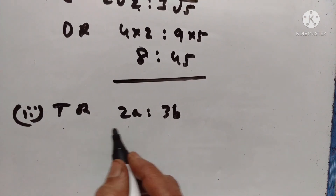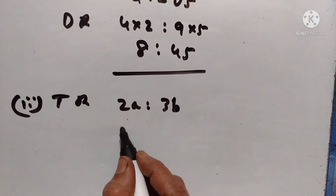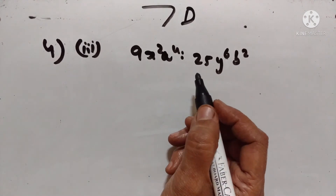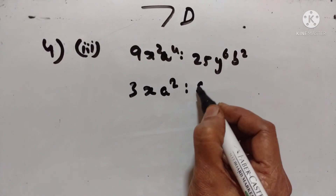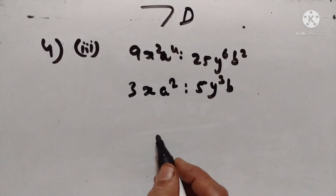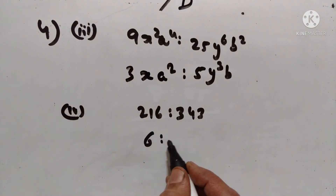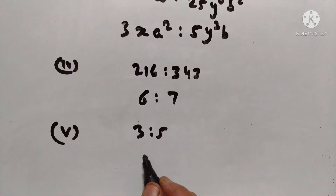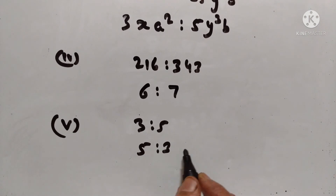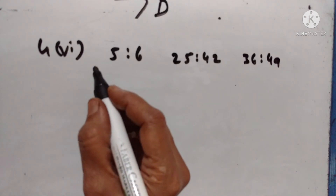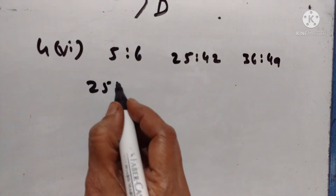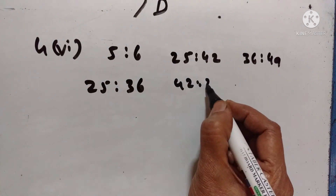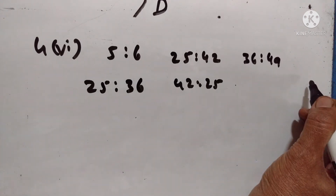Next: triplicate ratio of 2a is to 3b — triplicate means cube — so it is 8a cubed is to 27b cubed. Subduplicate ratio means square root. The subduplicate ratio is found by taking the square root. Reciprocal ratio of 3 is to 5 is 5 is to 3. Subduplicate ratio of 36 is to 49: square root of 36 is 6, square root of 49 is 7, giving 6 is to 7.